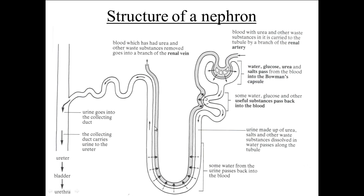Blood which has had the urea and other waste substances removed then heads back towards the renal vein. While the products which are left within the tubule dissolve in water and form urine. That goes towards the collecting duct and out towards the ureter and bladder.